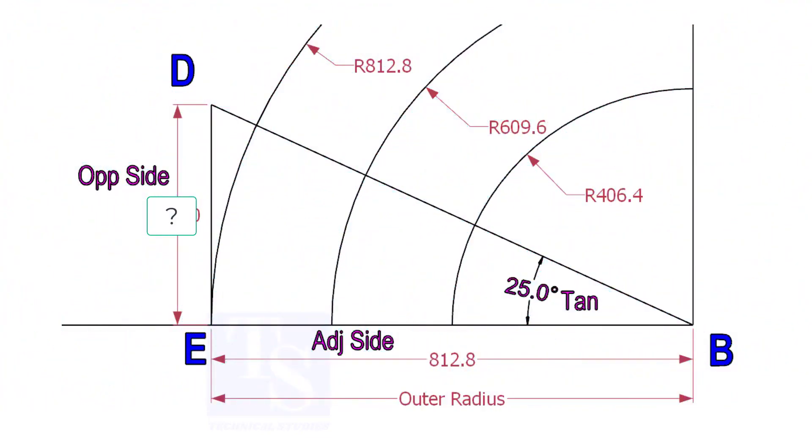Mark a line 25-degree rotated from the base line AB. To draw the line DB, we need to know the length of the line ED.